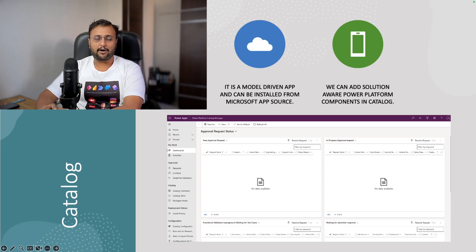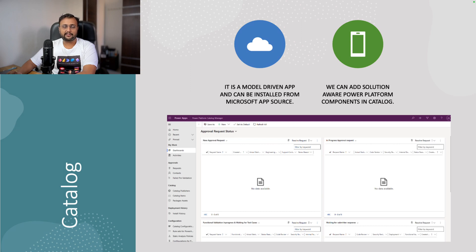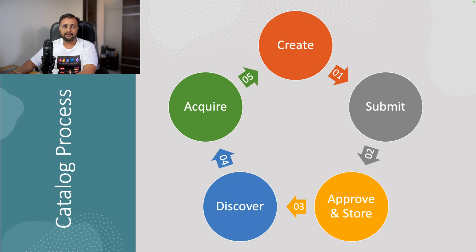Now let me talk about how someone can get started with the Catalog. The Catalog is a model-driven application installed from Microsoft AppSource. You can add solution-aware Power Platform components inside it. Any application or solution added to the Catalog passes through a specific approval cycle. Makers create the appropriate solution and submit it for approval. After the approver approves it, it is available across the entire organization and users can easily acquire that solution inside their environment.